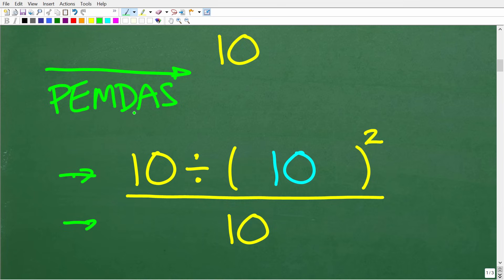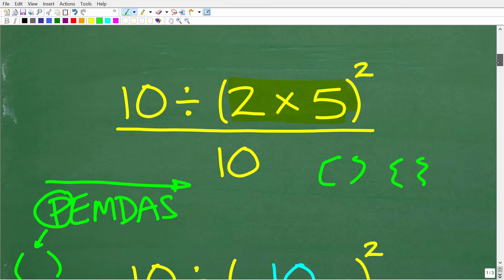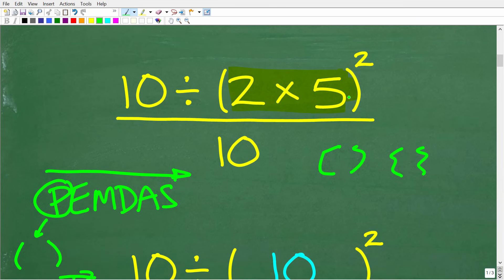Okay, so PEMDAS stands for the following. So P is parentheses. So if you see any grouping symbols, i.e. parentheses, brackets, or these type of squiggly brackets, that's where you're going to start first. All right, so obviously this is why I took this step right here because we have parentheses.